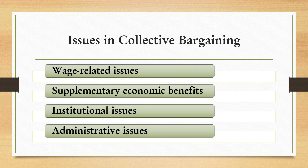The issues in collective bargaining include: wage-related issues such as how basic wage rates are determined, wage differentiation, and overtime rates; supplementary economic benefits such as pension plans, paid vacation, paid holidays, and health insurance plans; institutional issues covering rights and duties of employees, employers, and unions; and administrative issues such as seniority, employee discipline, discharge procedures, work rules, training, and technological changes.